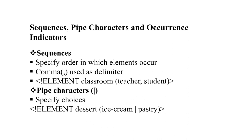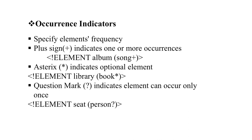Pipe is used whenever we want to give a choice — for example, desserts where we choose between ice cream and pastry. Occurrence, or cardinality: the plus sign means one or more occurrences, like album with song-plus meaning it may contain one or more songs. Asterisk means any number of times, like library with book-asterisk. Question mark means it is optional and if used, it appears only once — like seat with person, meaning only one seat is allocated to one person.